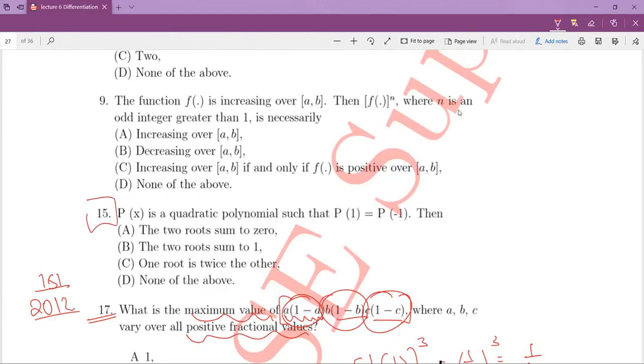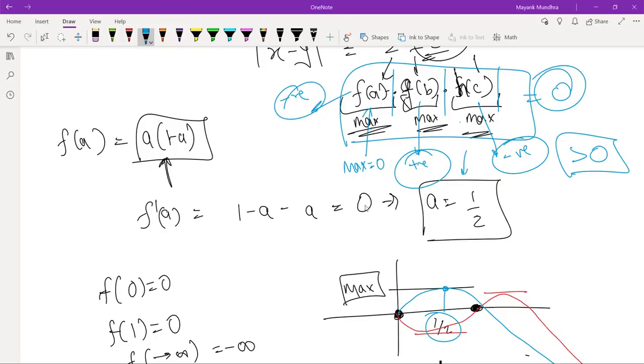ISI 2012, question number 15: a quadratic polynomial such that P of 1 is equals to P of minus 1.